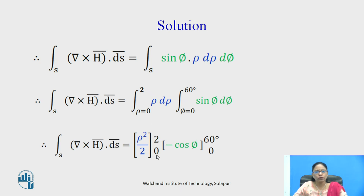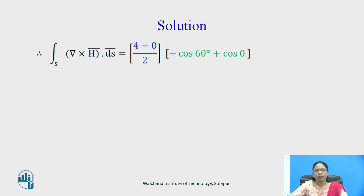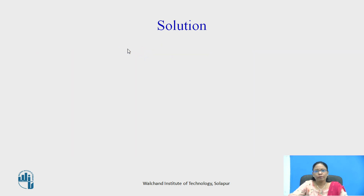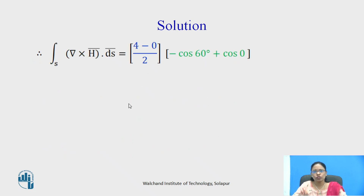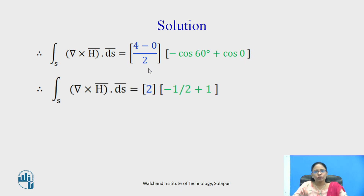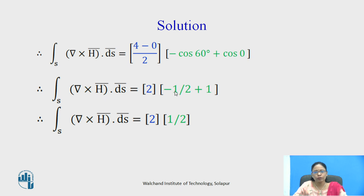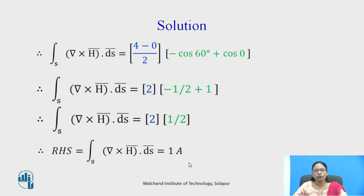Evaluating: ∫₀² ρ dρ = [ρ²/2]₀² = 4/2 = 2. And ∫₀^(60°) sinφ dφ = [−cosφ]₀^(60°) = −cos60° + cos0° = −1/2 + 1 = 1/2. Multiplying: 2 × (1/2) = 1. So the RHS, the surface integral of curl h-bar dot ds-bar, equals 1 ampere.